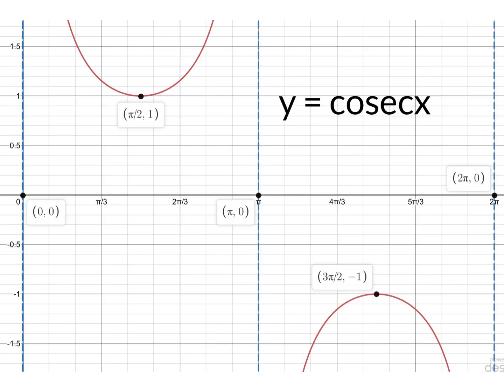For cosec, it's the reciprocal of sine. So sine was at (0, 0), and at π and at 2π, so that's why we have asymptotes there.